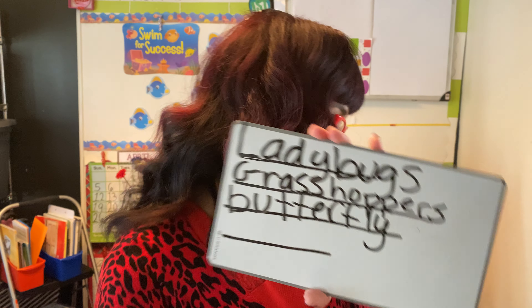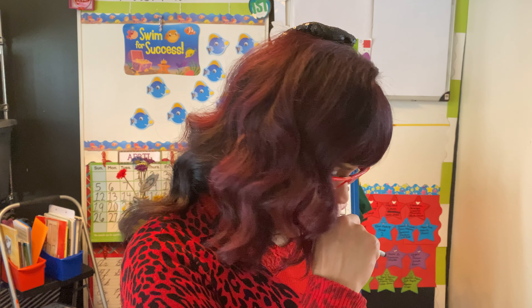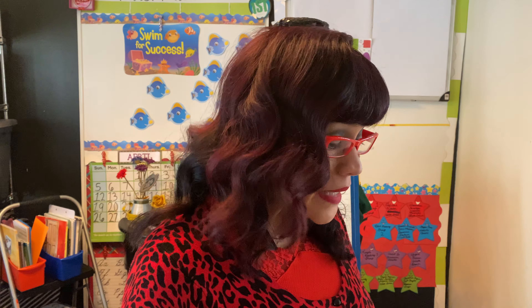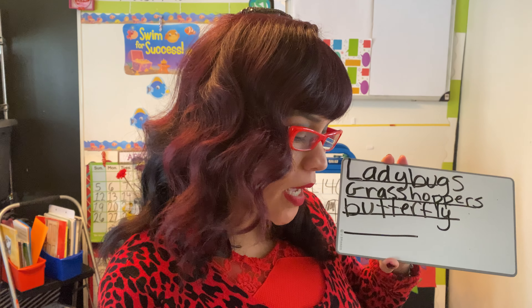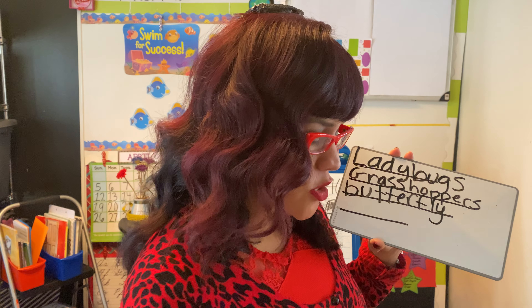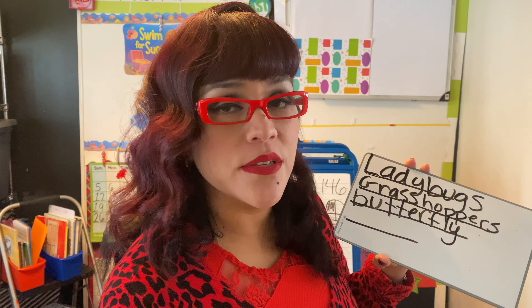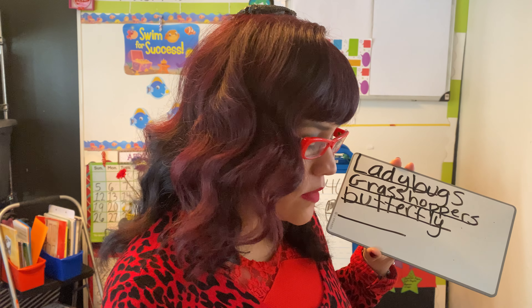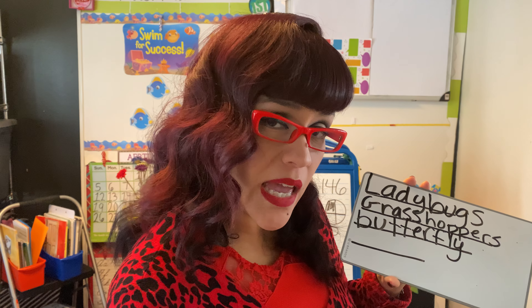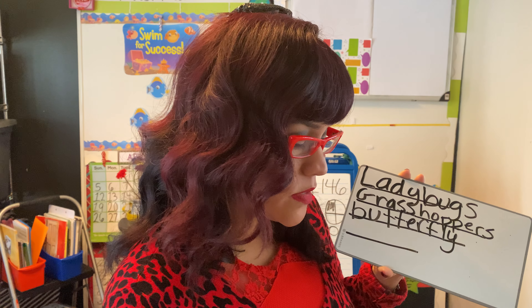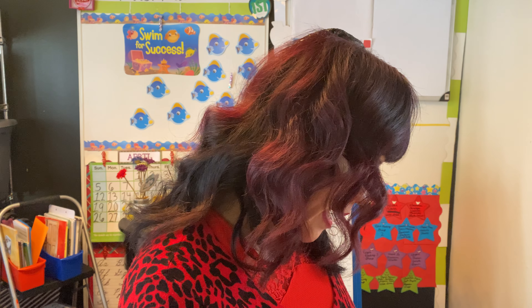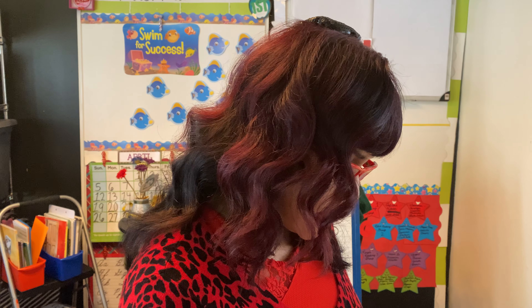Next question, fourth sentence: 'blank work hard to find food for their families.' There's a picture there that shows you what those are. The answer is 'ants' — can you guys echo me? Ants. Just a reminder, the first word is supposed to be capitalized because that's how we're starting the sentence with the word 'ants.' So go ahead and capitalize your A.